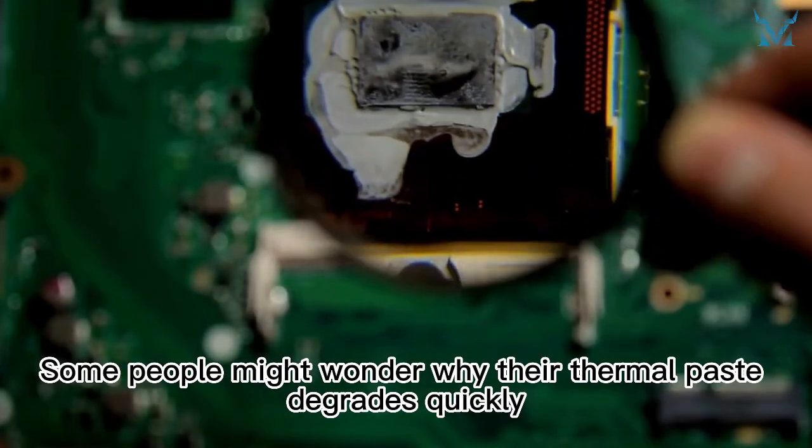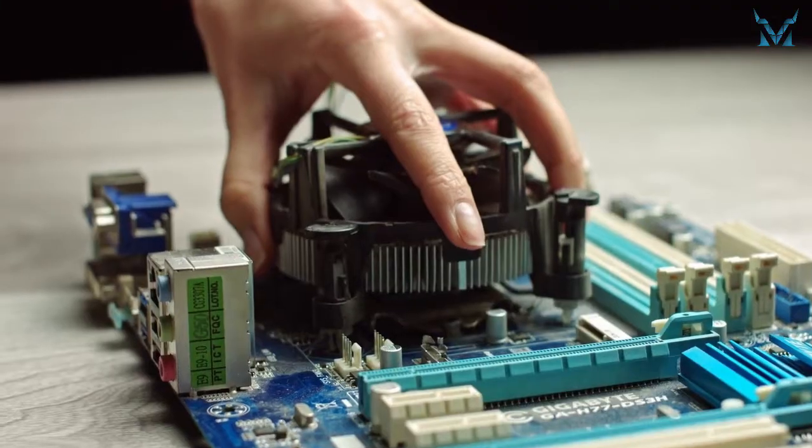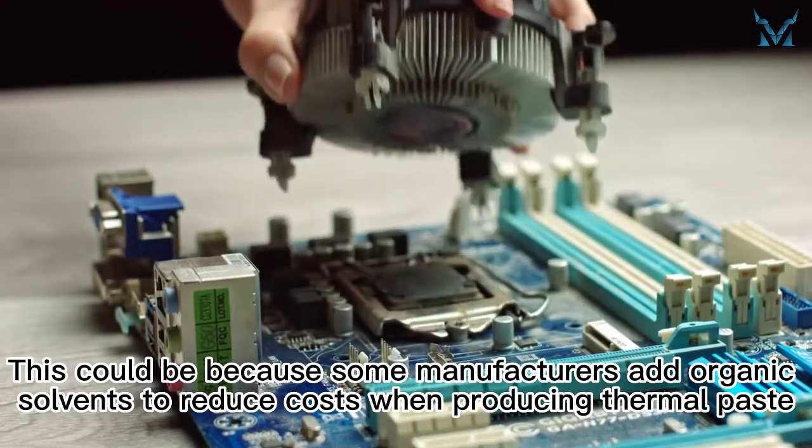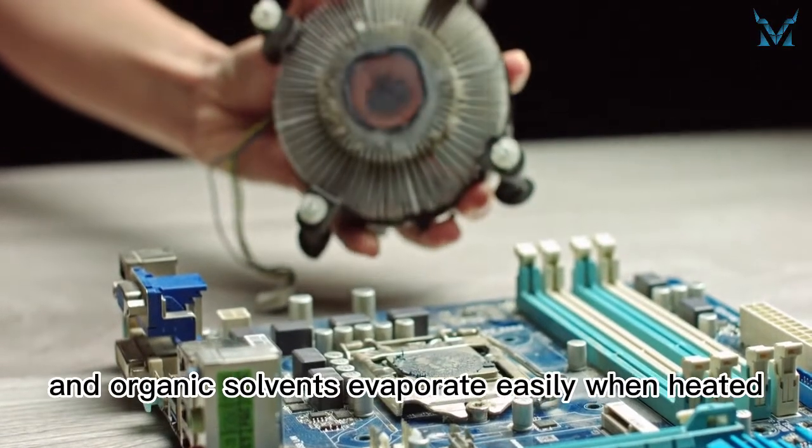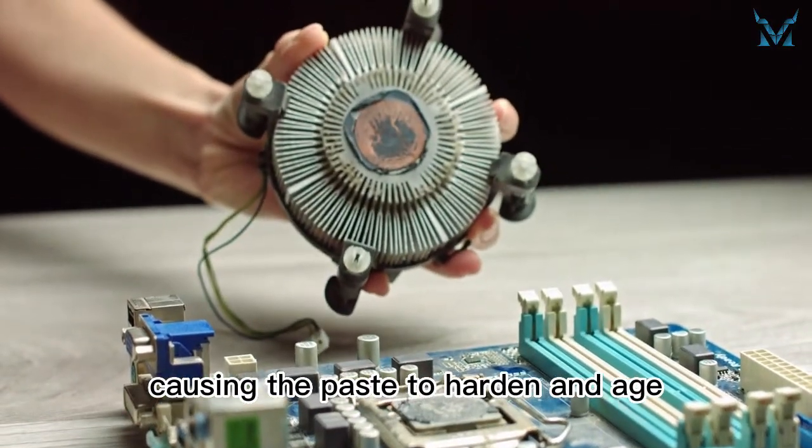Some people might wonder why their thermal paste degrades quickly. This could be because some manufacturers add organic solvents to reduce costs when producing thermal paste, and organic solvents evaporate easily when heated, causing the paste to harden and age.